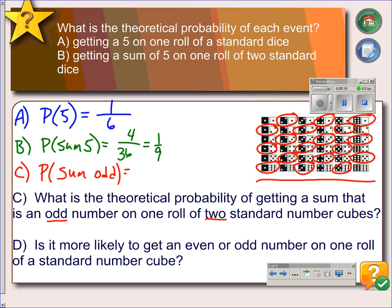So we count 18 odd outcomes out of the 36 combinations of two dice. So that equals 1 half, which is 50%.